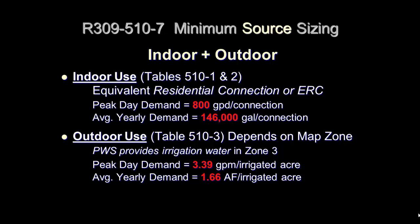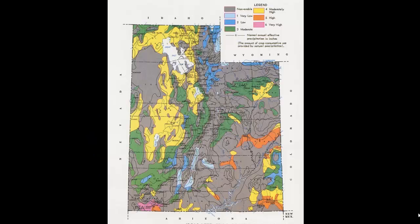This is the image of the irrigation zone map. Utah has six climate zones, excluding non-arable lands, which correspond with crop consumptive use and annual precipitation. In the northern mountains, the outside watering requirements would be quite low — Zone 1 — compared with the southern part of the state where the climate is usually very warm, Zone 6. As a result, these use zones have different outside watering requirements.